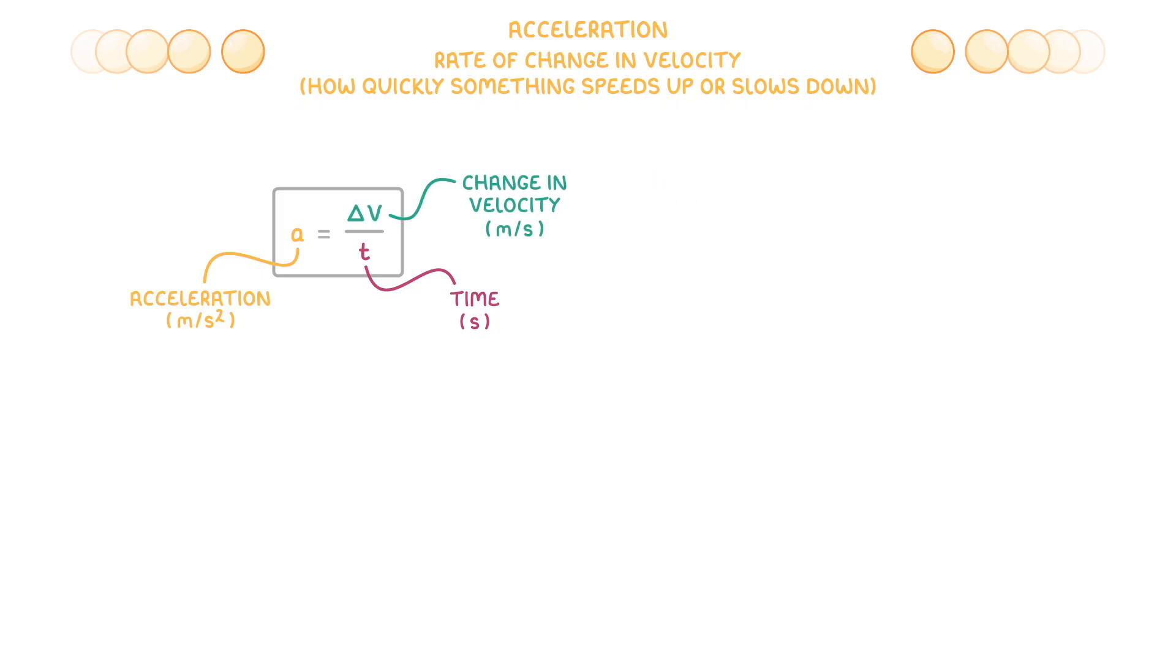If you haven't seen it before, this little triangle is a delta sign, and it just means change. So delta v means change in velocity. You might also see delta v written as v minus u, where v is the final velocity, and u is the initial velocity. So by subtracting one from the other, we can find out how much the velocity has changed.